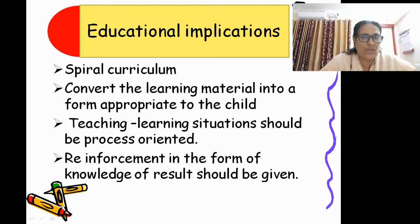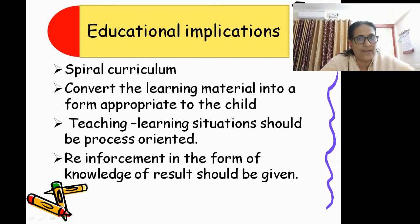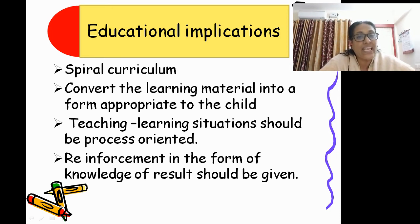Coming to the educational implications of Bruner's theory: first, implementation of spiral curriculum — the curriculum should be arranged with increasing difficulty based on the intellectual ability of children. Second, converting learning material into a form appropriate to the intellectual ability of the child. Third, teaching-learning situations should be process-oriented, because discovery learning is proposed by Bruner, so each individual should be placed in the position of a discoverer and given problem-based activities. Fourth, reinforcement in the form of knowledge of results should also be given, as it can act as reinforcement for children.